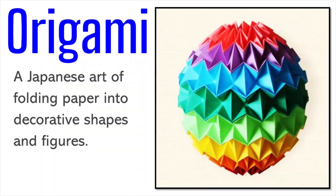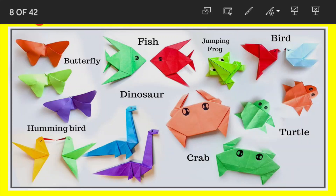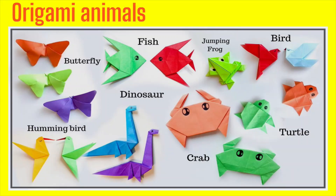Traditionally, origami does not include the use of glue, tape, any marks, or scissors. The idea is to create a figure from paper by folding a flat piece of paper with no additional tools. The most popular origami shapes are animals and flowers. Some samples of origami can be seen here.